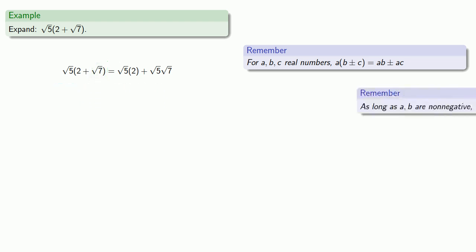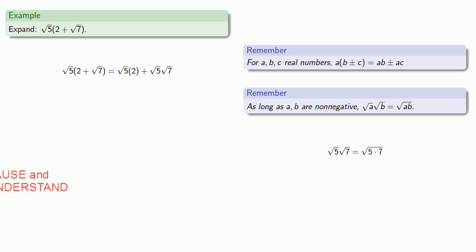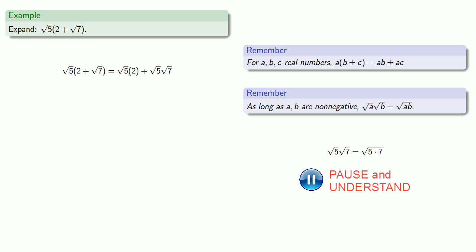Now, as long as a and b are non-negative, the product of square roots is the square root of a product. So the square root of 5 times square root of 7 is going to be the same as the square root of 5 times 7, otherwise known as the square root of 35.